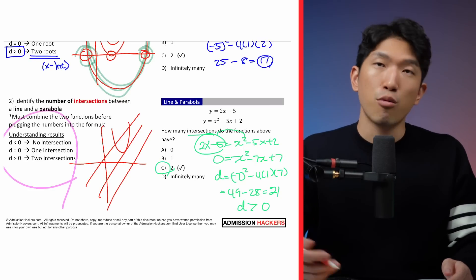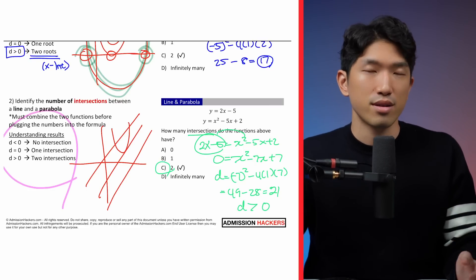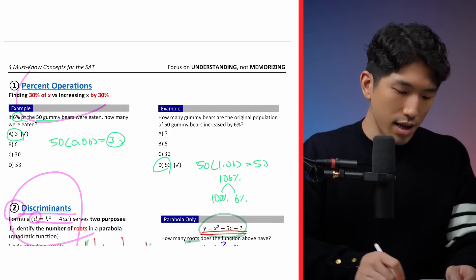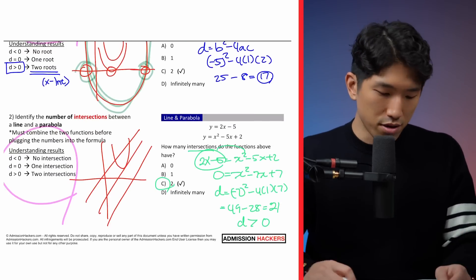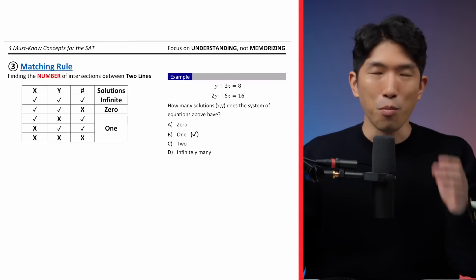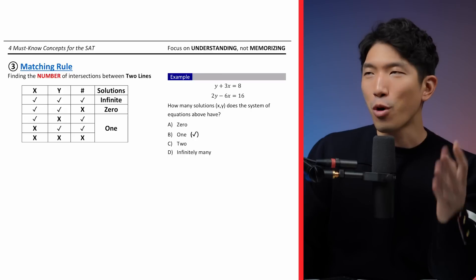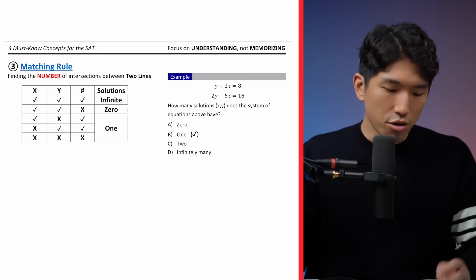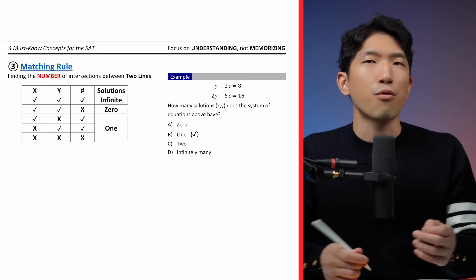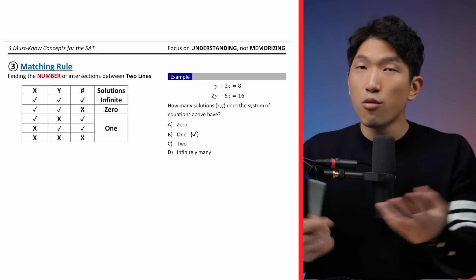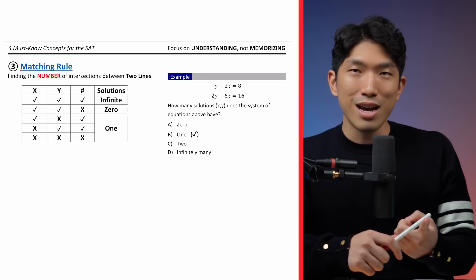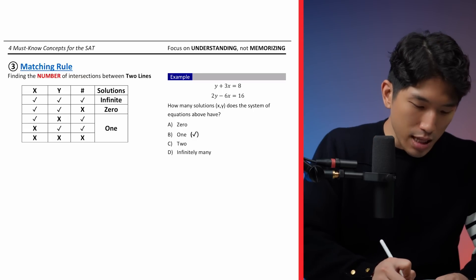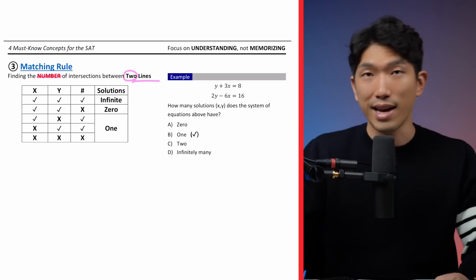That's the quick table you really want to understand and memorize. The next topic is matching rule. Matching rule is similar to discriminant but works a little differently. We used discriminant for a line and a parabola — well, matching rule is used when we have a line and another line. The sole purpose of matching rule is to show you the number of intersections between two lines. We're not looking for the exact location, just the number of times two lines intersect.